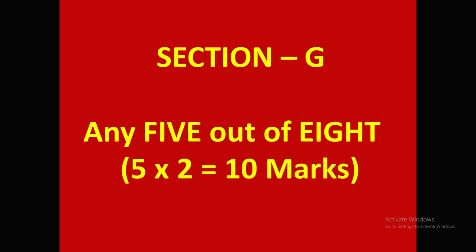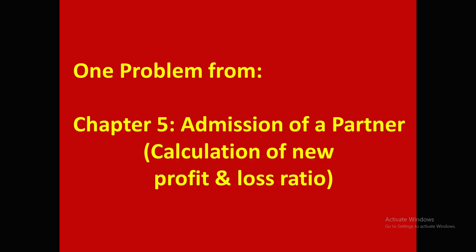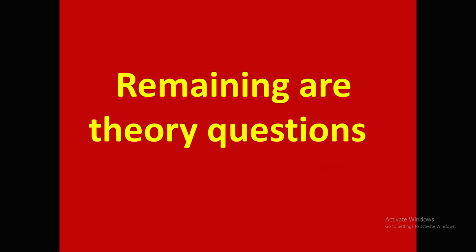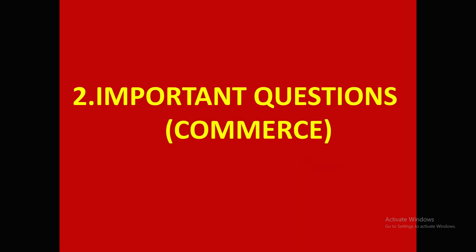Section G: 8 questions will be given; you have to write any 5. Each one is 2 marks — 5 into 2 = 10 marks. Out of these eight, one question will be a problem from Chapter 5, Admission of a Partner, on the topic of calculation of new profit and loss ratio. The remaining 7 questions are theory questions. With this, the first topic — question paper pattern — is completed. Now come to the second topic: important questions from the commerce part, first the 10-mark questions.